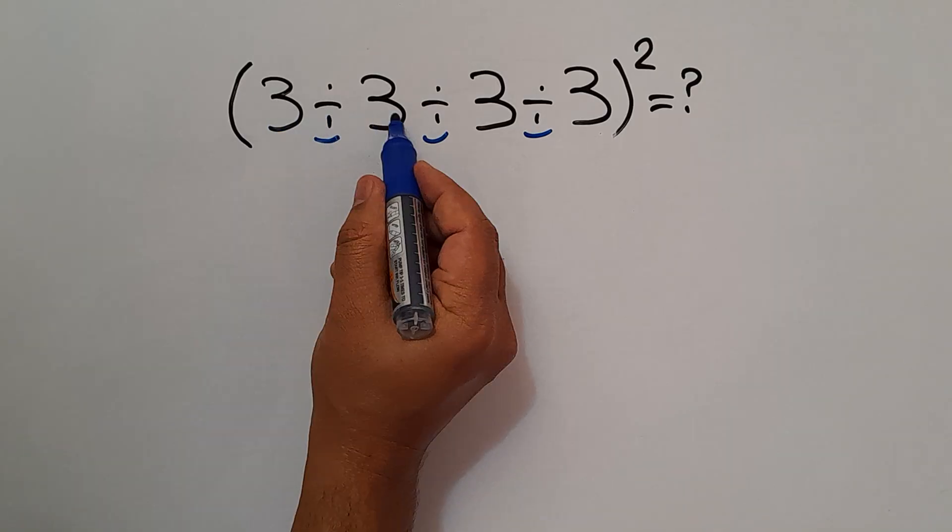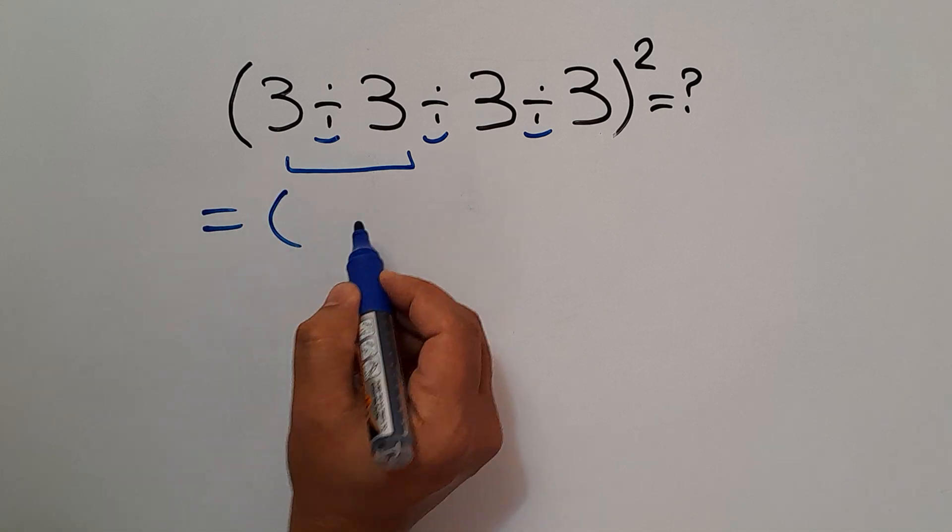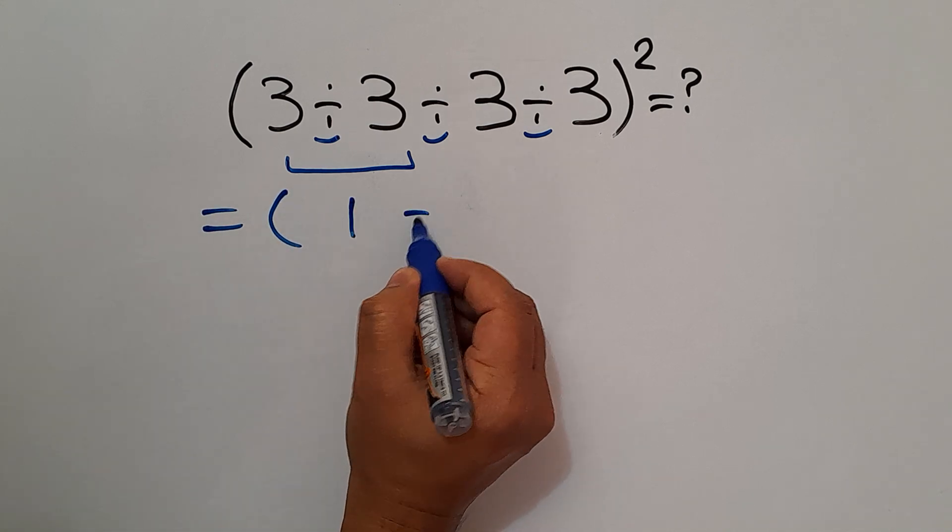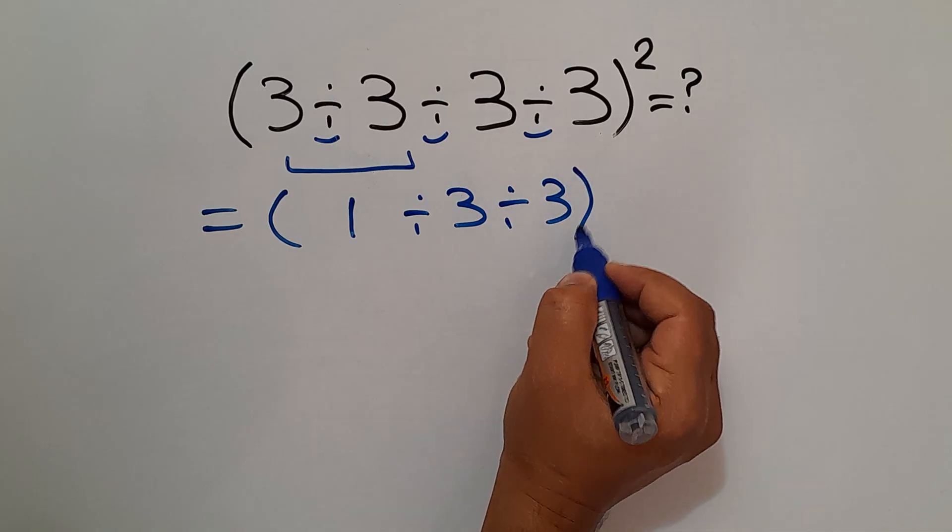So, 3 divided by 3 gives us 1. So, we have parentheses 1 divided by 3, divided by 3 again, and whole squared.